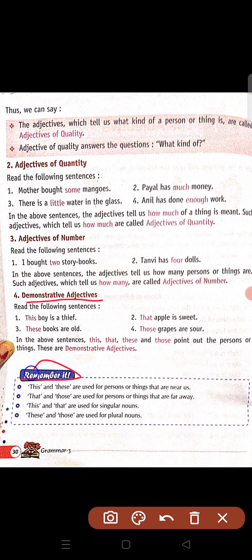Now remember: this and these are used for persons or things that are near us — aapke paas hain, ek ya ek se zyada. That and those are used for persons or things that are far from you — aapse door hain. This and that are used for singular nouns; these and those are used for plural nouns.